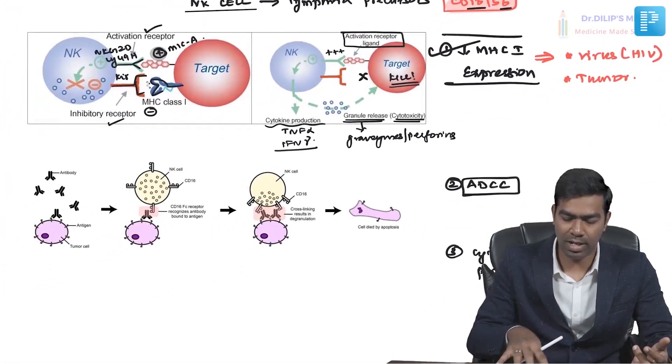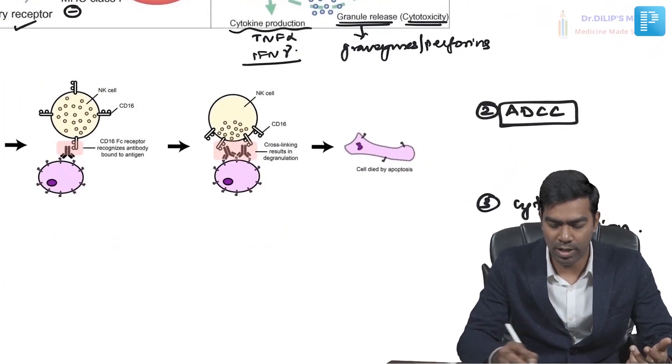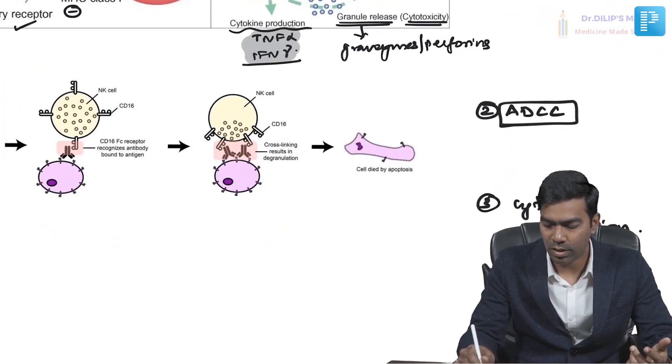NK cells also cause cytokine release, recruiting phagocytic and other inflammatory cells to the area so the target cell may be phagocytosed or killed by enzyme release from other cells.